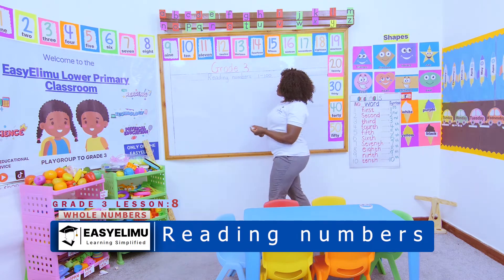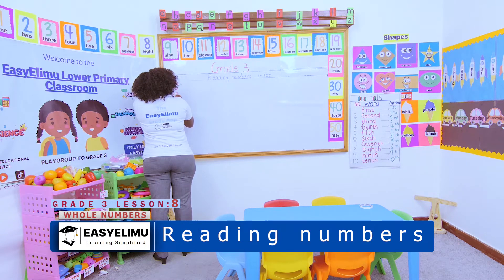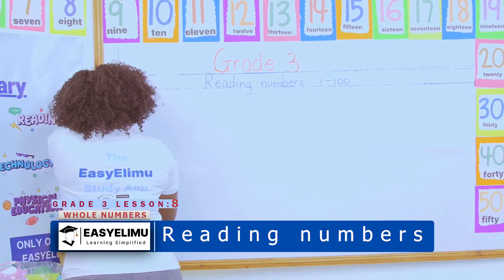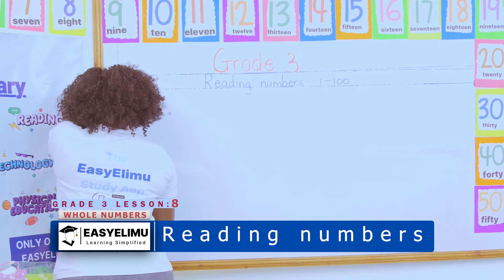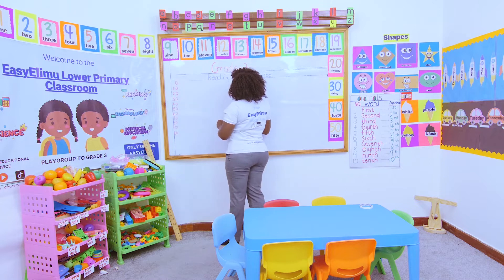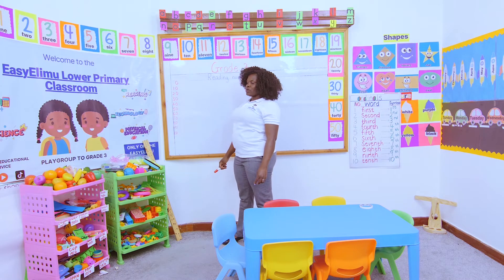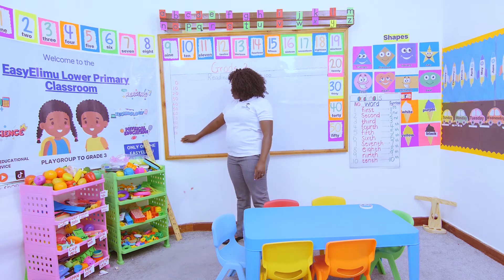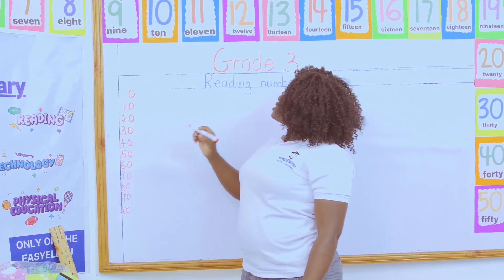For example, we have the number 0, the number 10, the number 20, the number 30, the number 40, the number 50, 60, 70, 80, 90, and 100. All these numbers that have a zero are what we call the tens — apart from 100. 100 is not a ten; 100 is just a hundred.